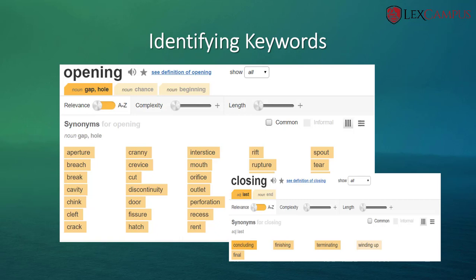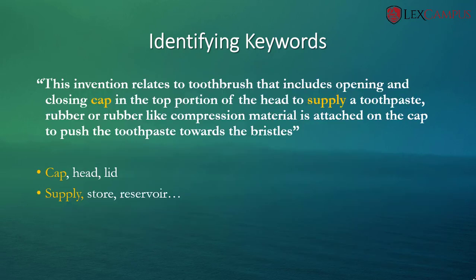So here for opening and closing, you will find relevant keywords, but you should always select keywords that are relevant in the context of the invention. Going forward, the words we still need to find synonyms for involve cap and supply. By using a dictionary or thesaurus, we see that cap, head, or lid are the relevant keywords, and for supply, either store or reservoir could be relevant in this case.